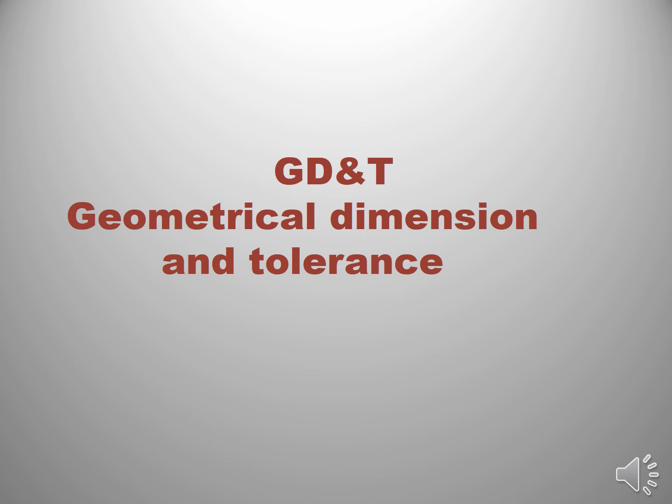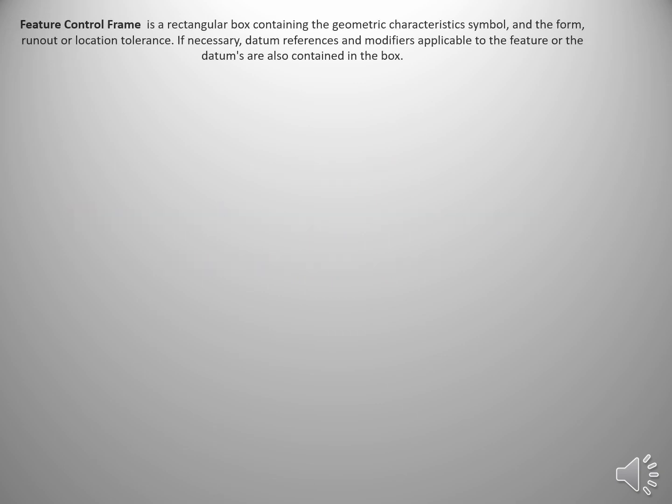Now we can discuss GD&T, Geometrical Dimension and Tolerance. A rectangular box containing geometrical tolerance characteristics is called as Feature Control Frame.